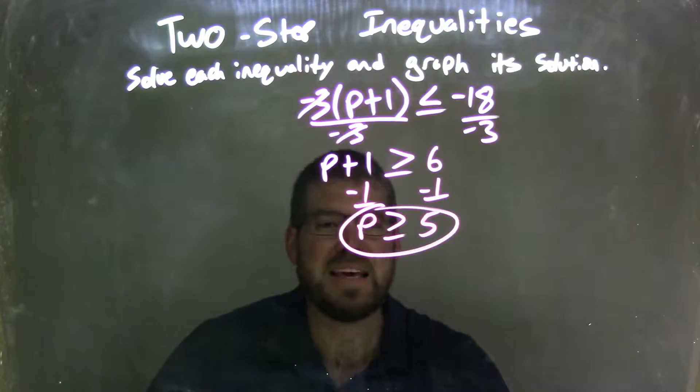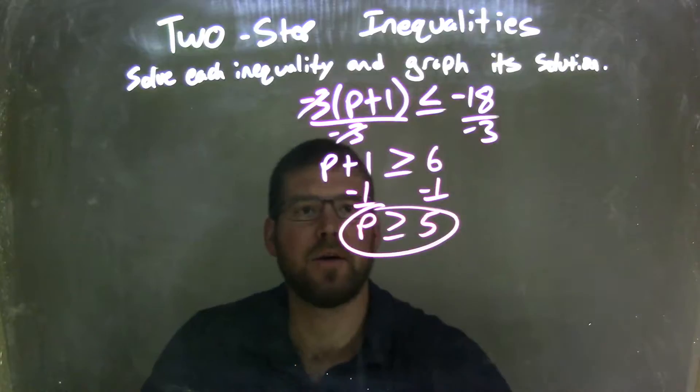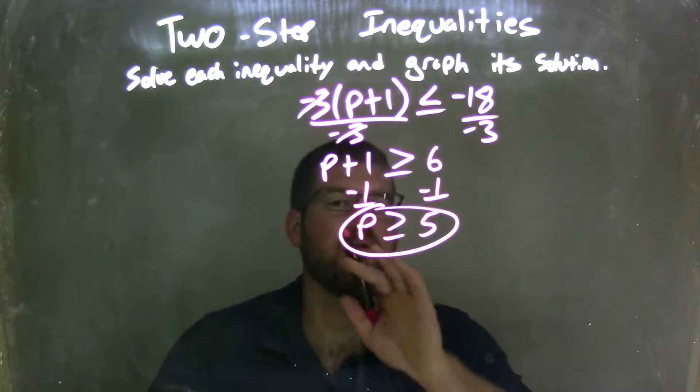And there we have p isolated. The most important part: we flip the inequality when we divide by negative 3 over that inequality.